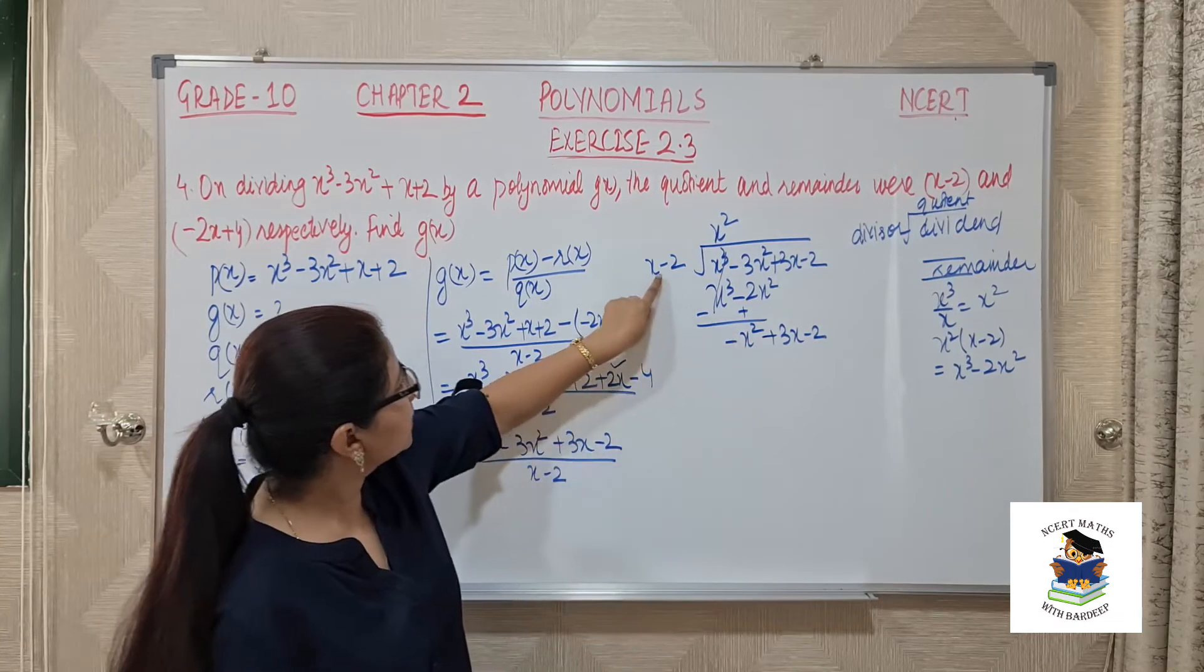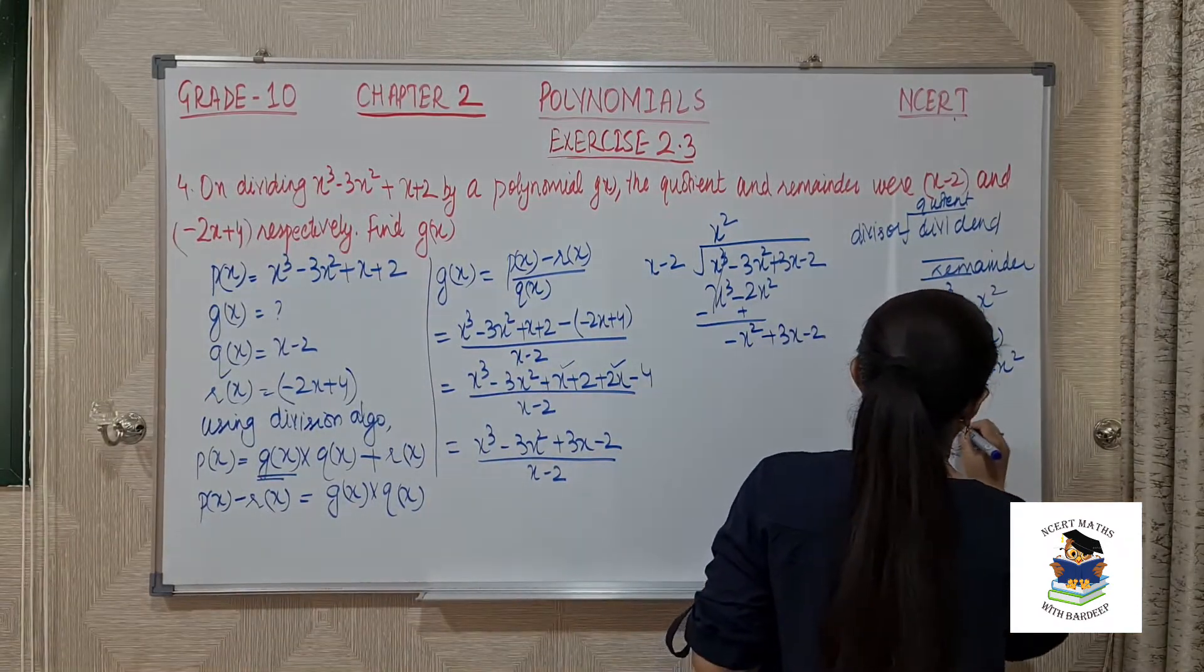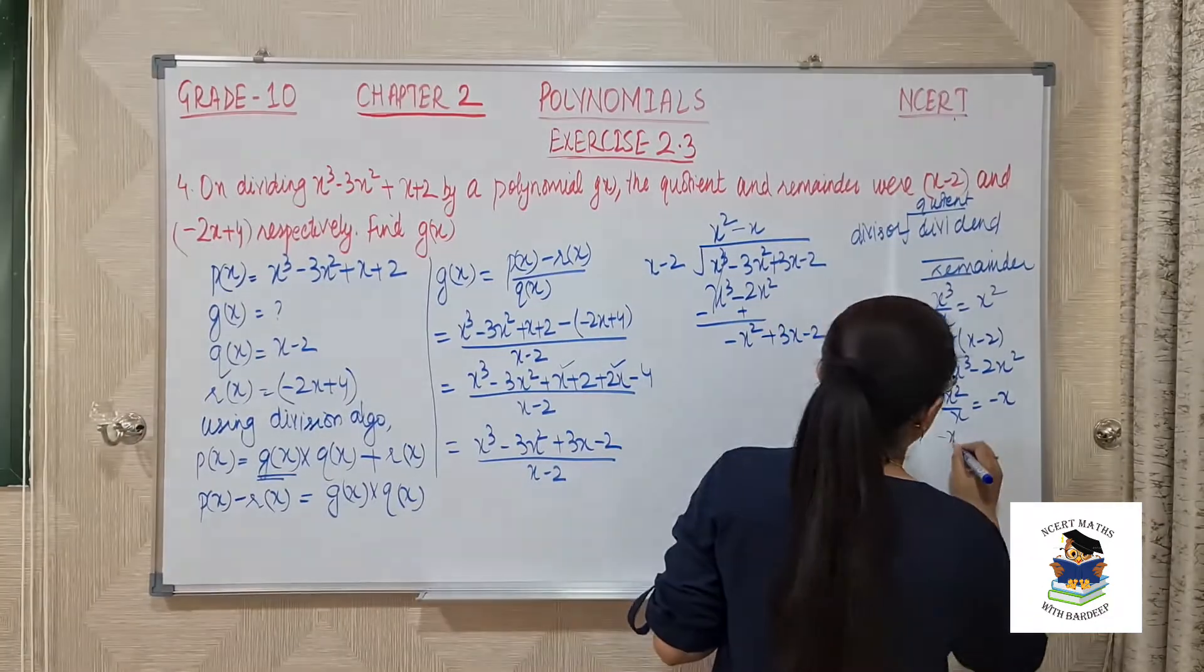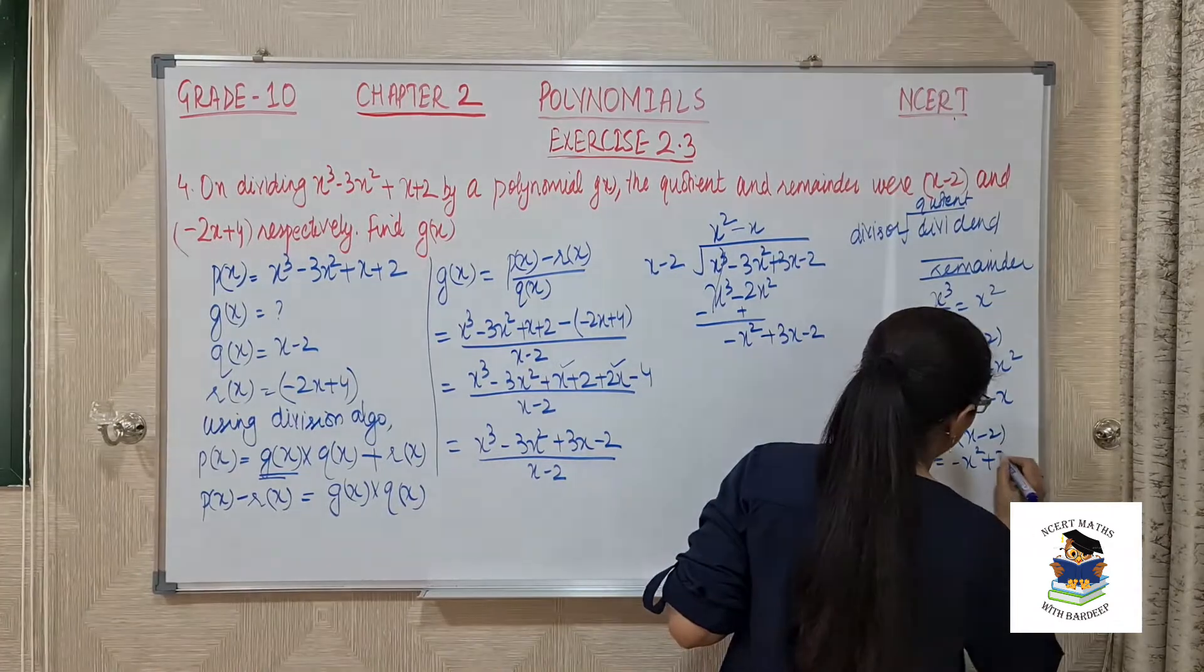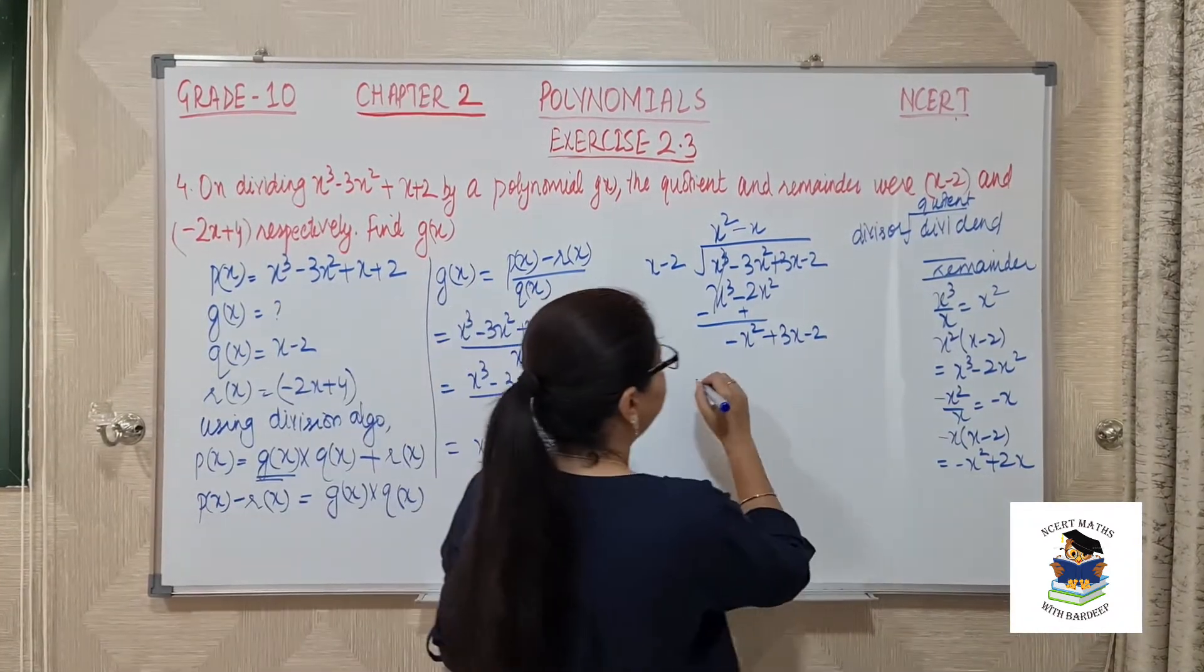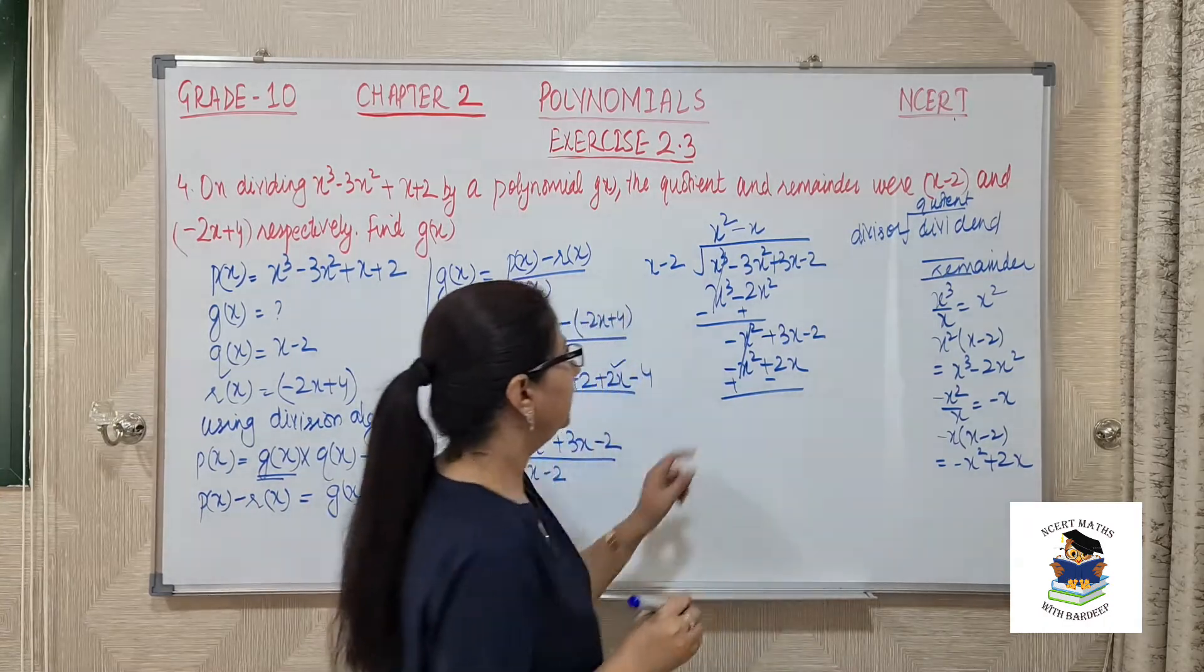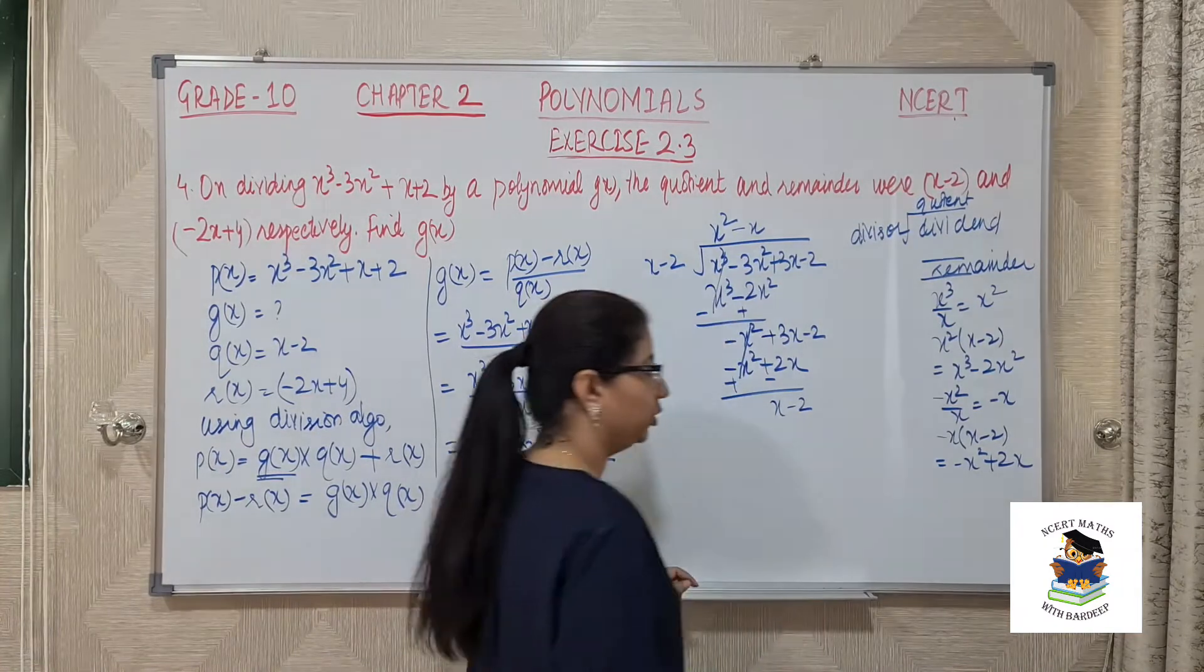Now minus x square should be divided with x, so this will be minus x. Minus x should be multiplied with x minus 2, so we will get minus x square plus 2x. Change the signs, these are cancelled. 3 minus 2 is 1, so plus x minus 2.